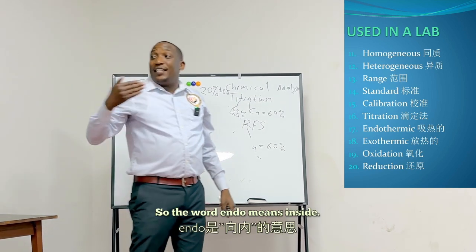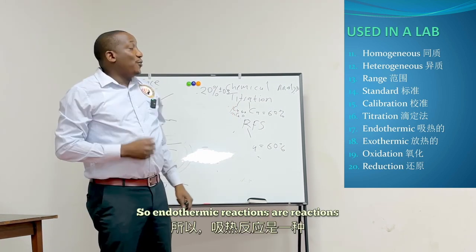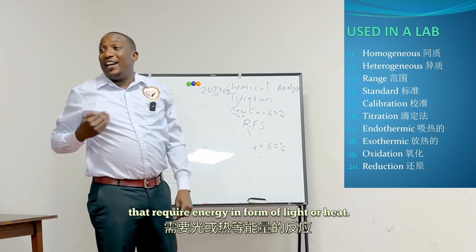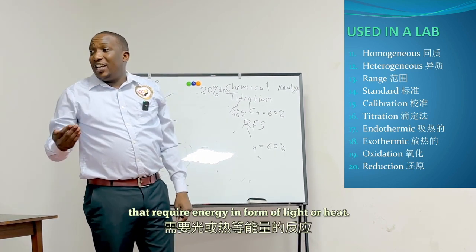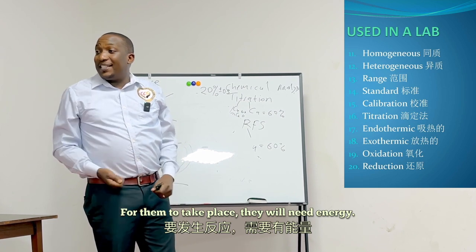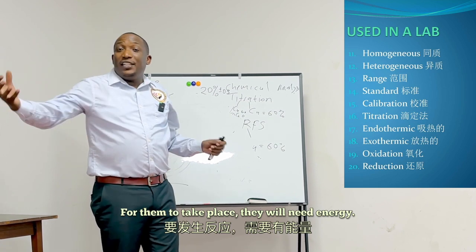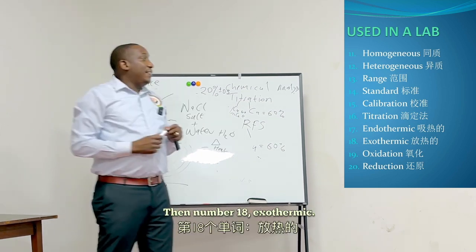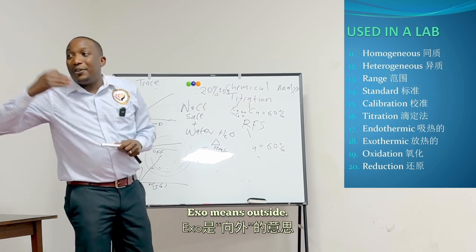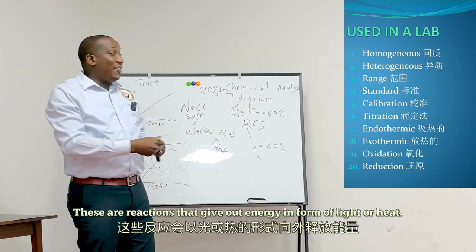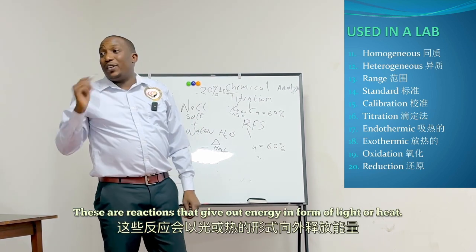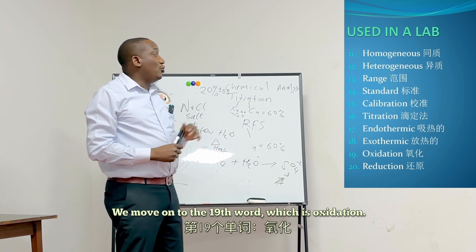The 17th word is endothermic. 'Endo' means inside — endothermic reactions are reactions that require energy in the form of light or heat to take place. Number 18 is exothermic. 'Exo' means outside — these are reactions that give out energy in the form of light or heat.